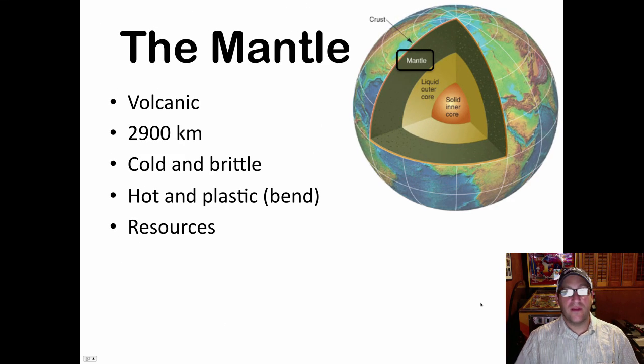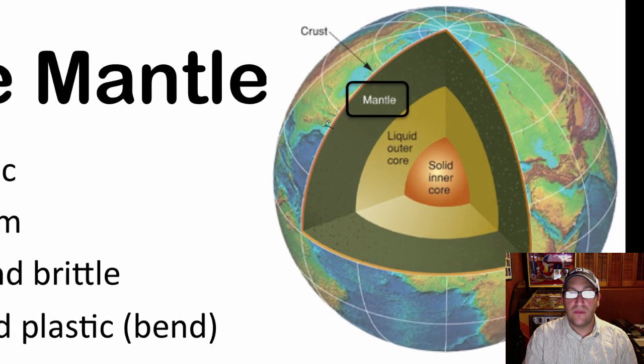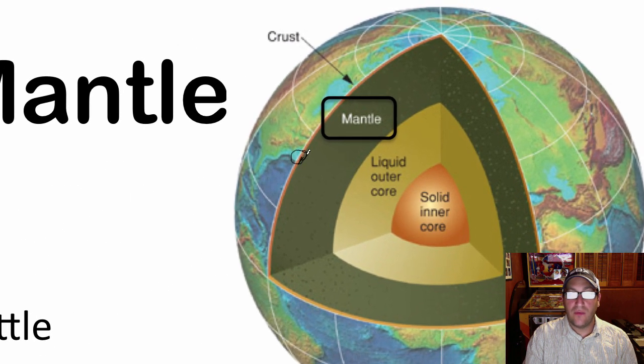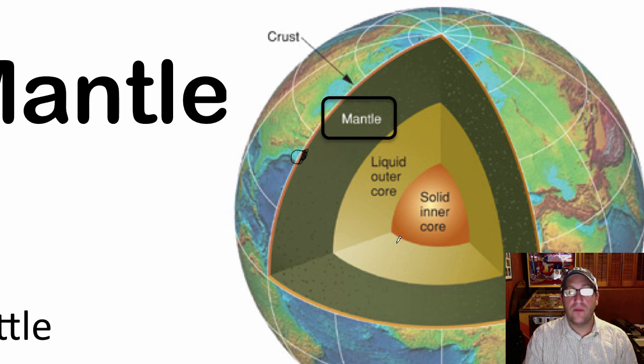Next we'll talk about the mantle. This is the second layer down, the layer right below the crust. Important note here is that all the rocks here are volcanic. The average thickness here is about 2,900 kilometers and it's cold and brittle towards the top. And what I mean by that is right over here, right where the crust meets the mantle, this very top portion right over here, this is still pretty cold and brittle.